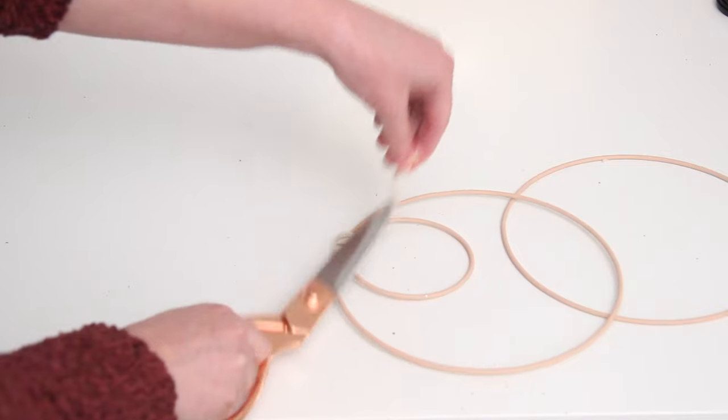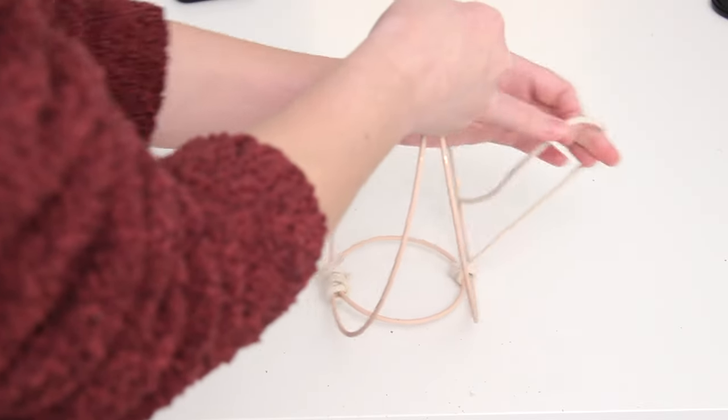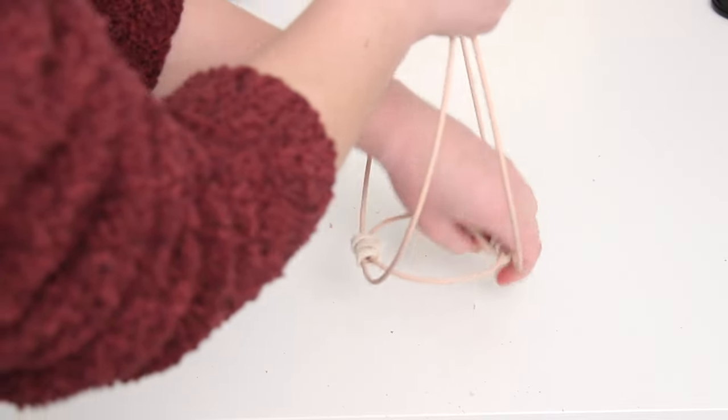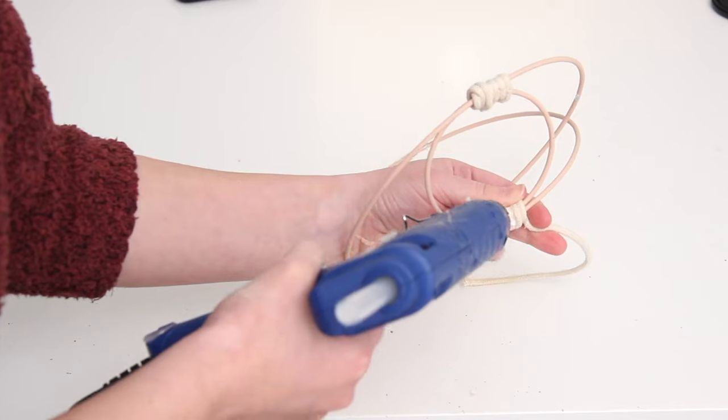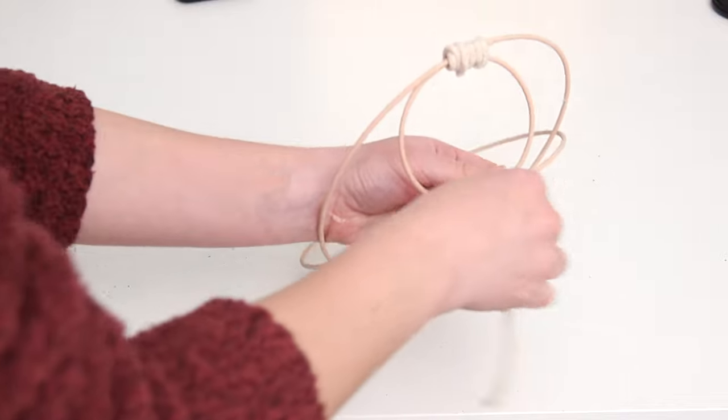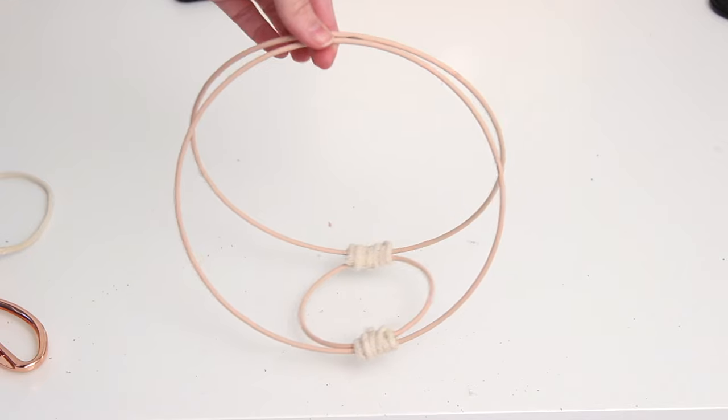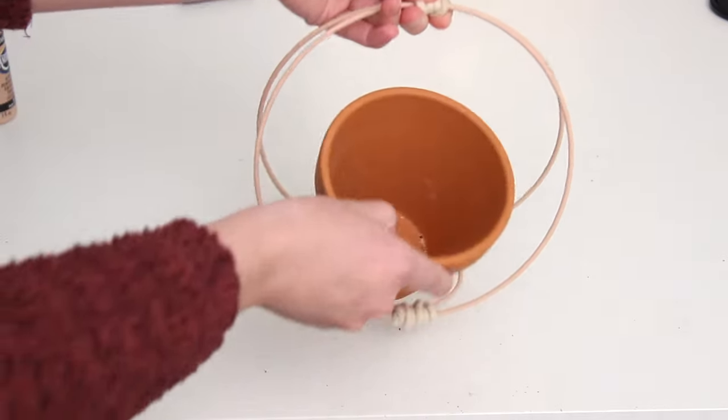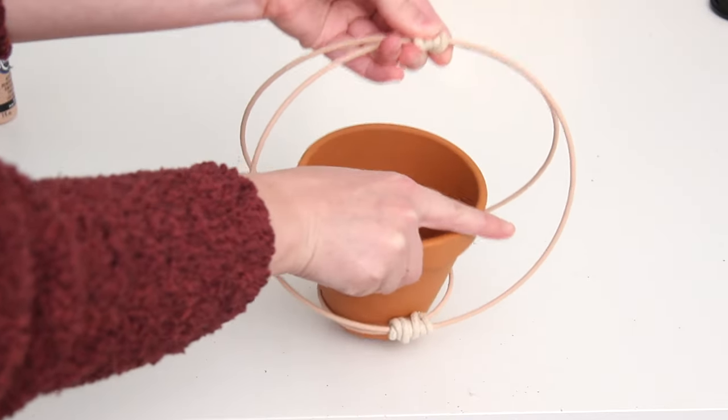Then I did this with the other big hoop as well, and just again, I was struggling, but I got it done. Wrapped the cord around a few times and then glued it down and cut off the excess. The last step is to gather up the two larger rings at the top and wrap some cord around there as well to keep them together. Then you can just add in a little pot, a little planter, and you can hang it up.